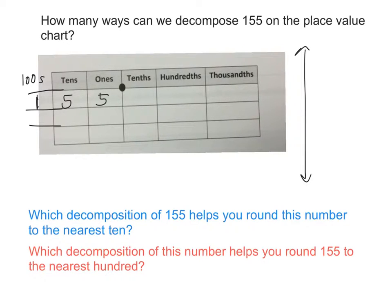Now, instead of calling it one hundred and five tens, could I also say that I have fifteen tens? So I could also say fifteen tens and five ones. Could I also say how many ones I have altogether? Yes — so I could call this one hundred fifty-five ones. No matter how I write this number — whether it's one hundred plus five tens plus five ones, or fifteen tens plus five ones, or one hundred fifty-five ones — do those all represent the same amount? Yeah.